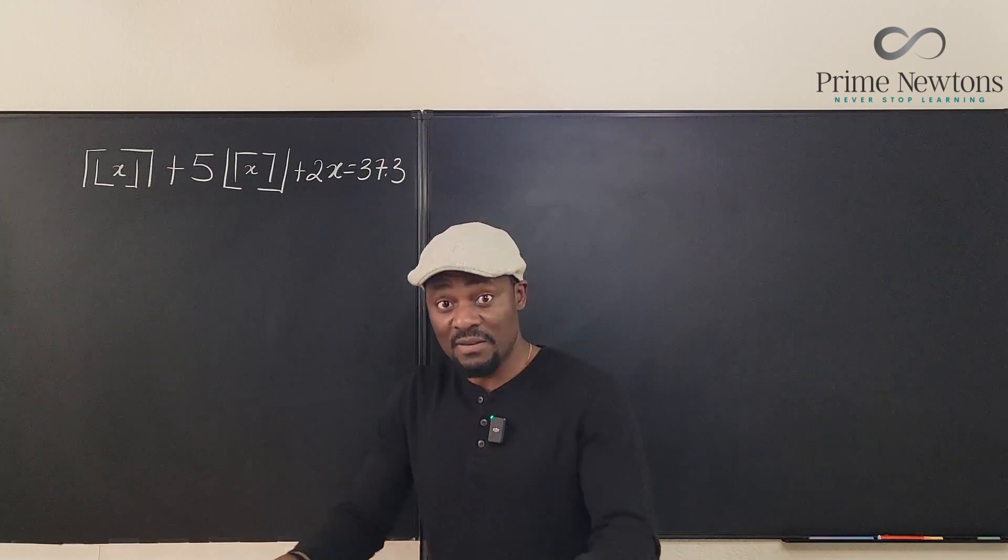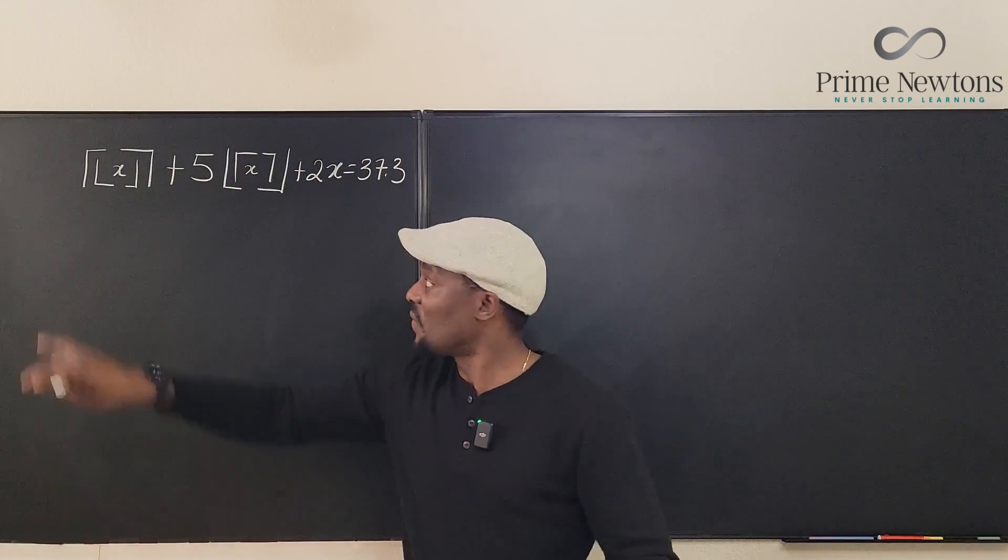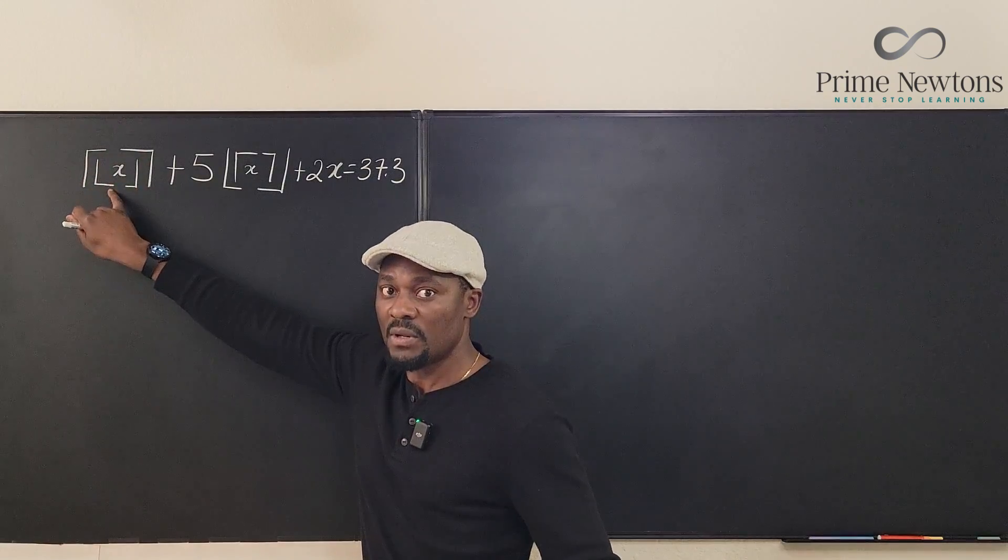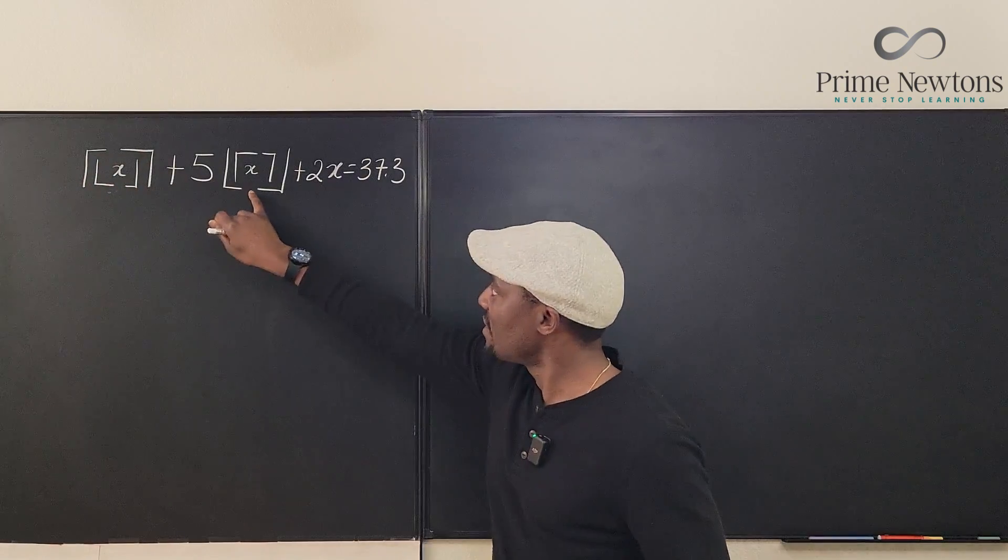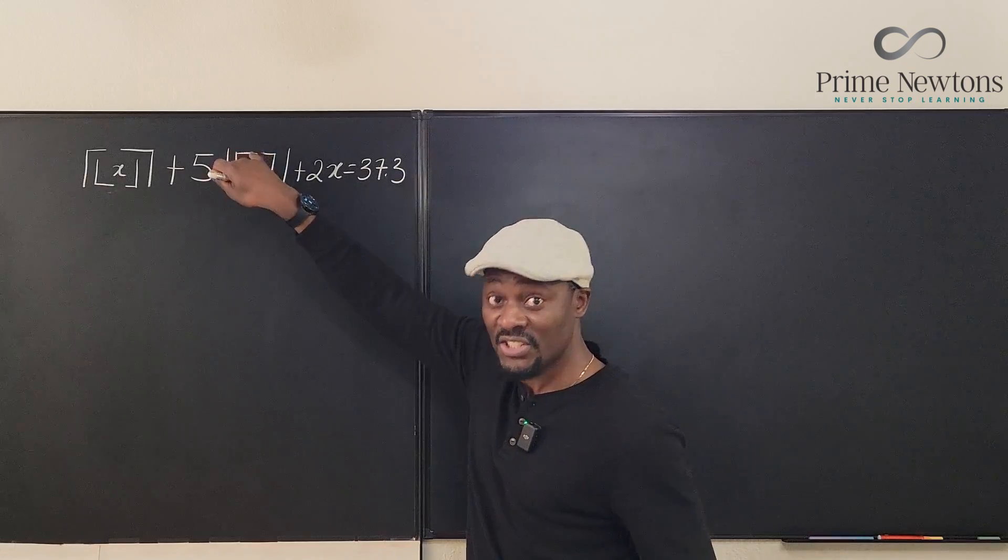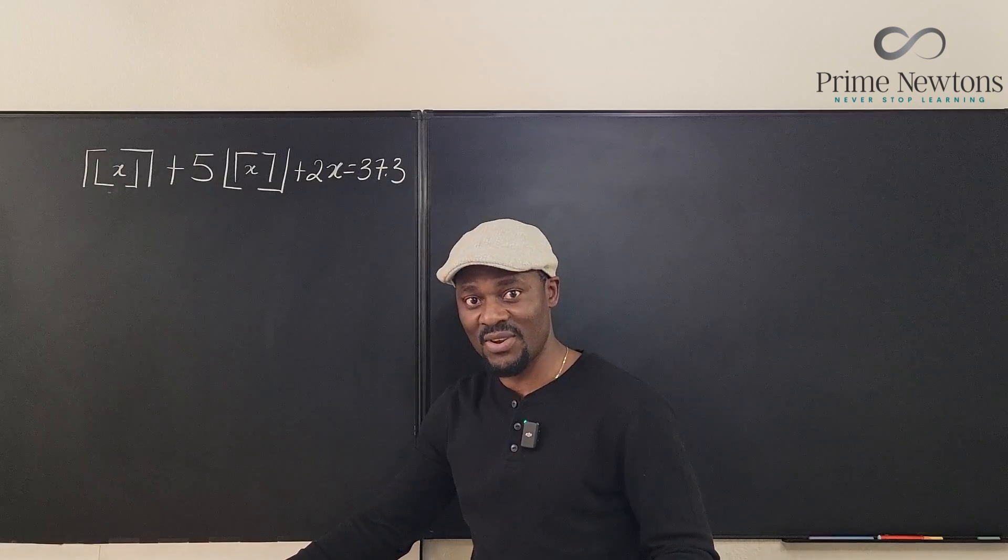Therefore it stays the same even when you try to find the ceiling. You can see the ceiling of a floor is the floor. Here it is the floor of the ceiling - the ceiling wouldn't change, it stays the same. The ceiling is its own floor because it's an integer.